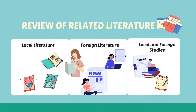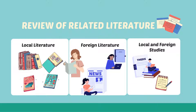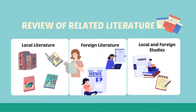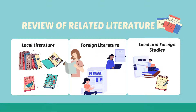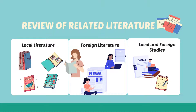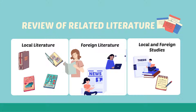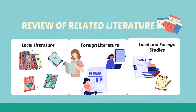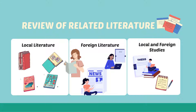The review of related literature is divided into the following subsections. Number one is what we call local literature — this includes books, magazines, newspapers, pictures, and articles written by local authors. Foreign literature includes the same types of materials but written by foreign authors. In local and foreign studies, these refer to graduate and undergraduate thesis dissertations. Those written by local authors are classified as local studies; those by foreign authors are foreign studies.